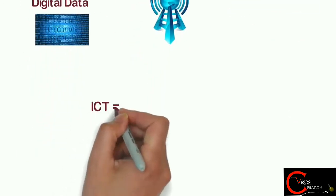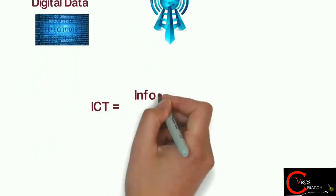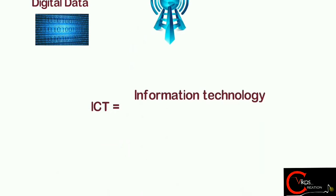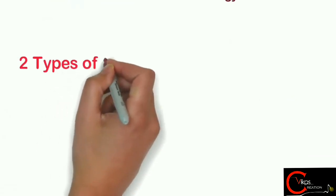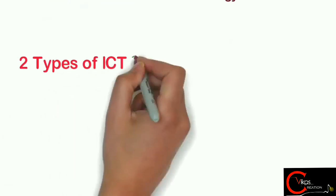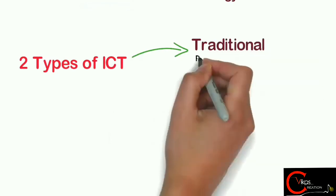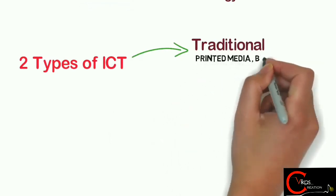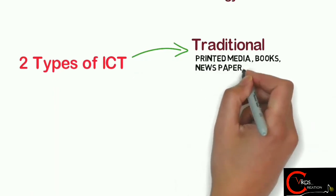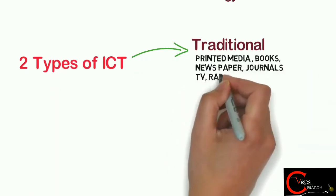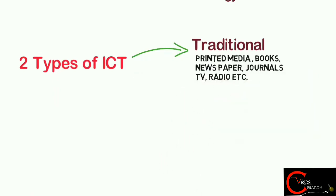So ICT is the convergence of information technology and communication technology. Basically, we can divide ICT in two types. The first one is traditional ICT, where we use printed media like newspaper, books, journals, and also television and radios.